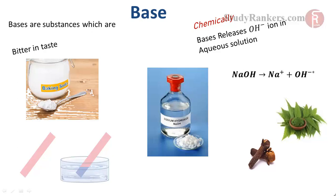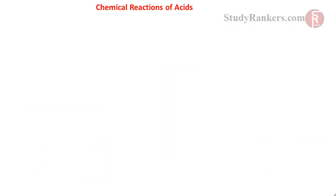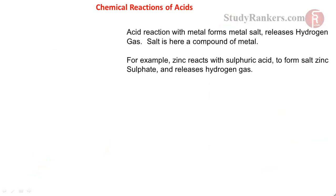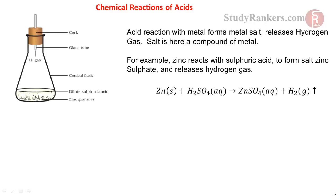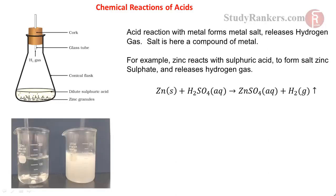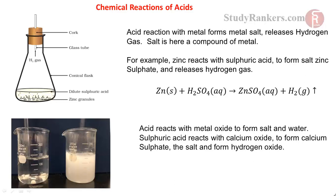Let's discuss some chemical reactions of acids and bases. Acid reacting with metal forms a metal salt and releases hydrogen gas. Salt here is a compound of the metal. For example, zinc reacts with acid to form zinc sulfate salt and releases hydrogen gas. Acid reacts with metal oxide to form salt and water; for example, sulfuric acid reacts with calcium oxide to form calcium sulfate and water.